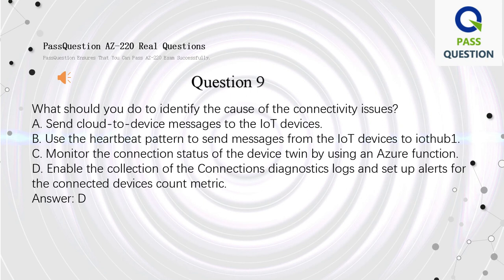Question 9. What should you do to identify the cause of the connectivity issues? A. Send cloud-to-device messages to the IoT devices. B. Use the heartbeat pattern to send messages from the IoT devices to IoT Hub. C. Monitor the connection status of the device twin by using an Azure function. D. Enable the collection of the connection's diagnostics logs and set up alerts for the connected device's count metric. Answer: D.